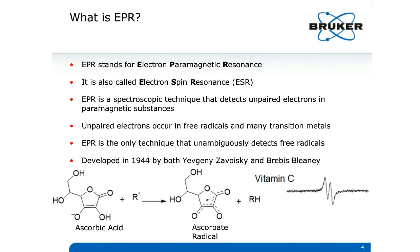EPR stands for electron paramagnetic resonance, sometimes called ESR or electron spin resonance. It is a spectroscopic technique that detects unpaired electrons. These unpaired electrons occur in free radicals and many transition metal complexes. One of the key strengths of EPR spectroscopy is that, unlike other methods to detect free radicals such as fluorescence, EPR is the only technique that unambiguously detects free radicals.